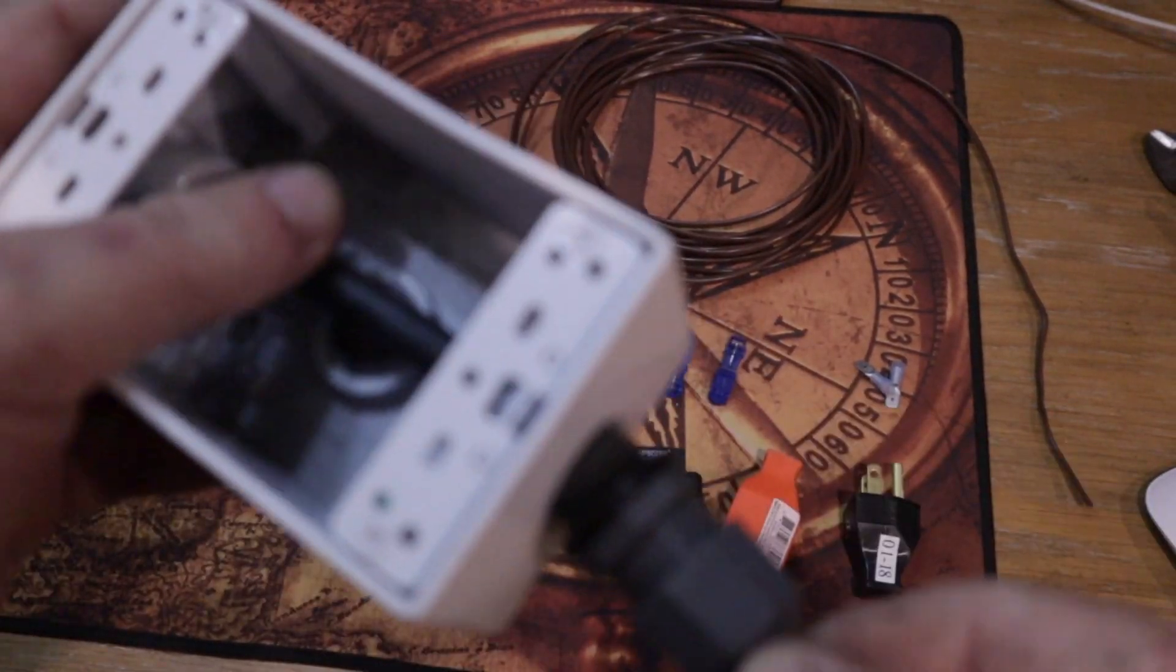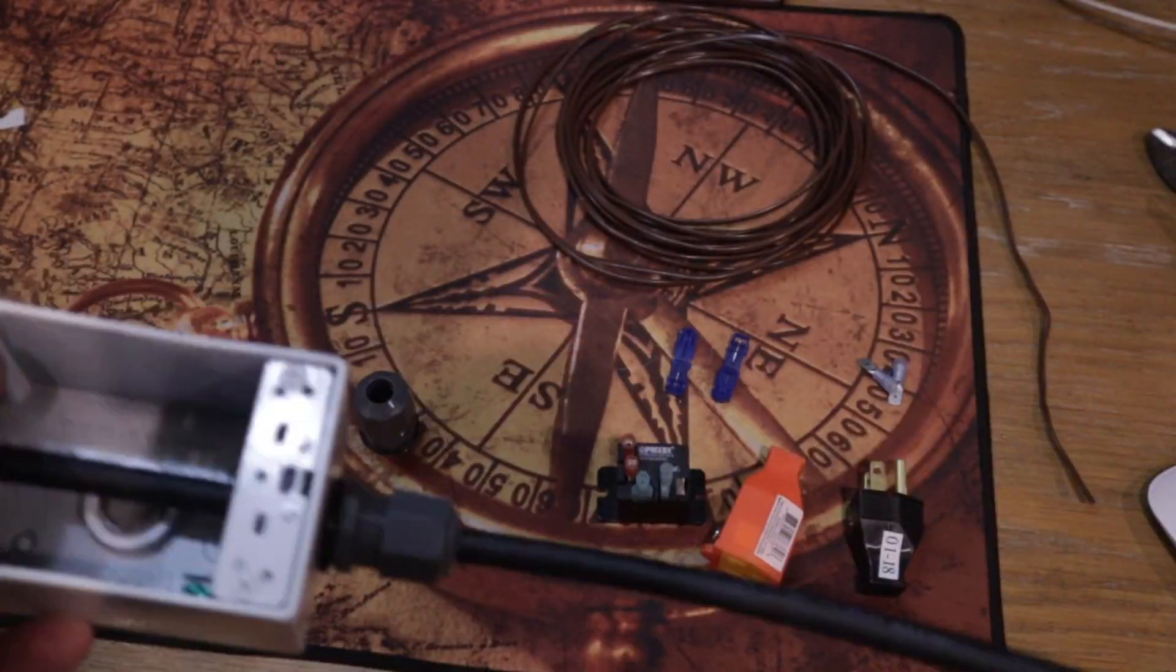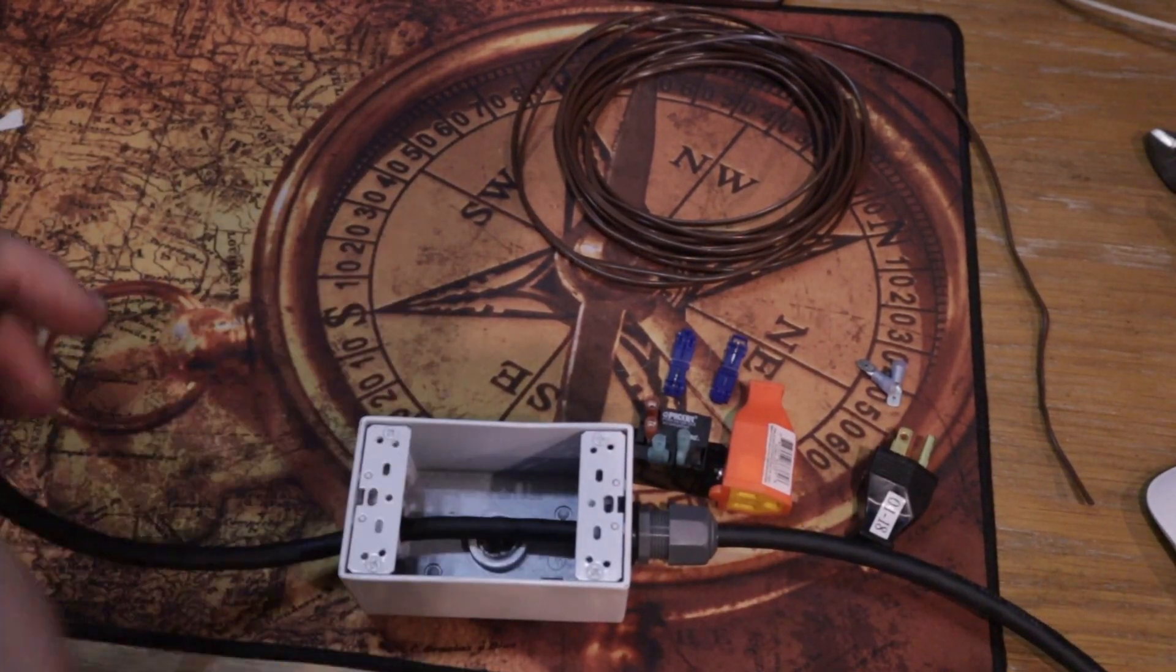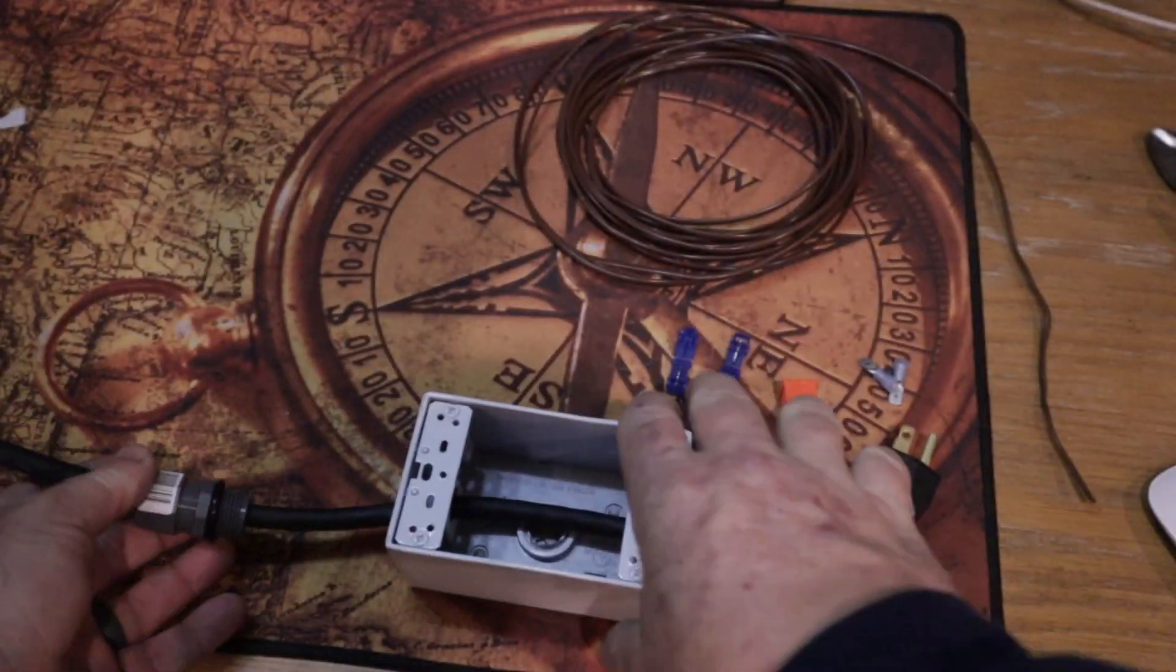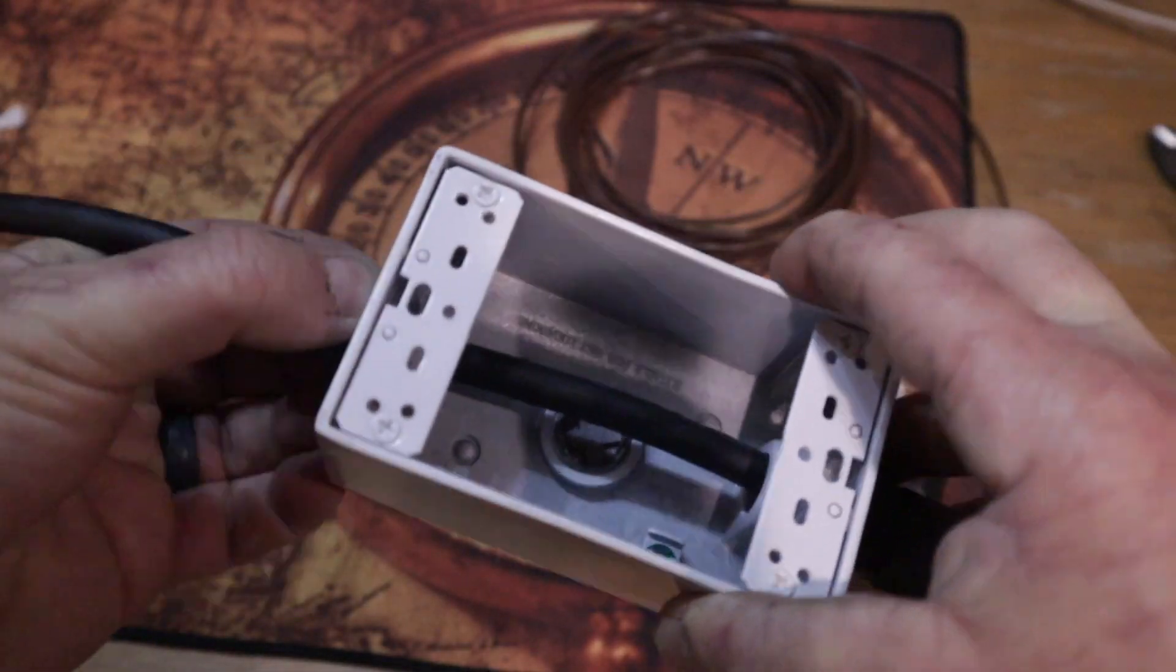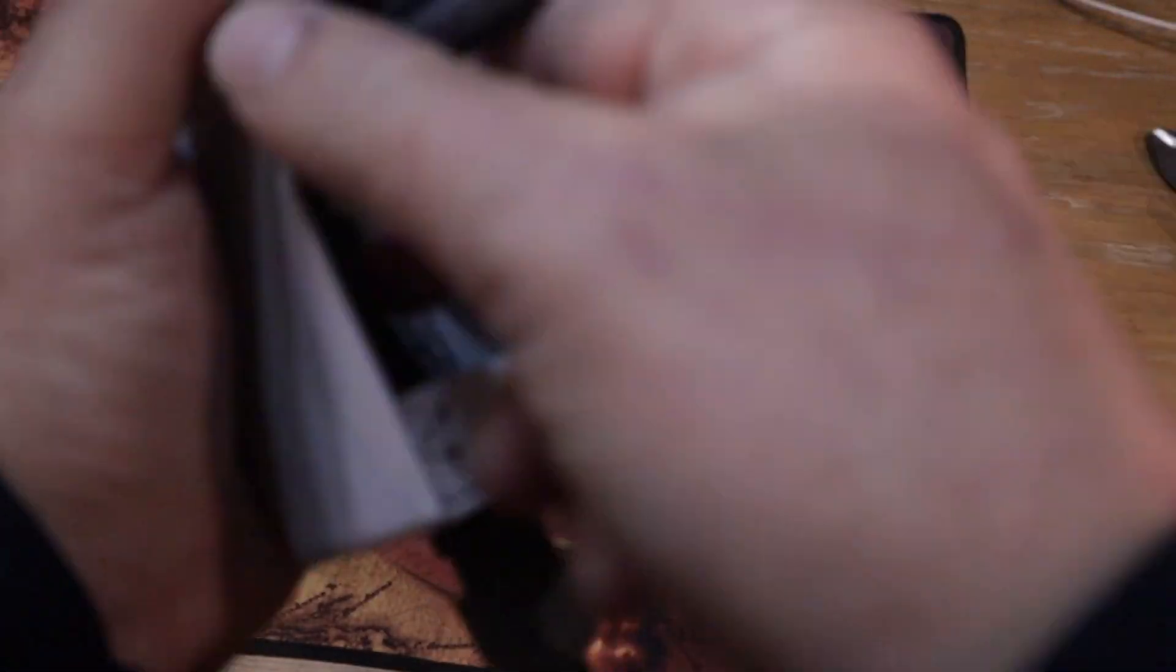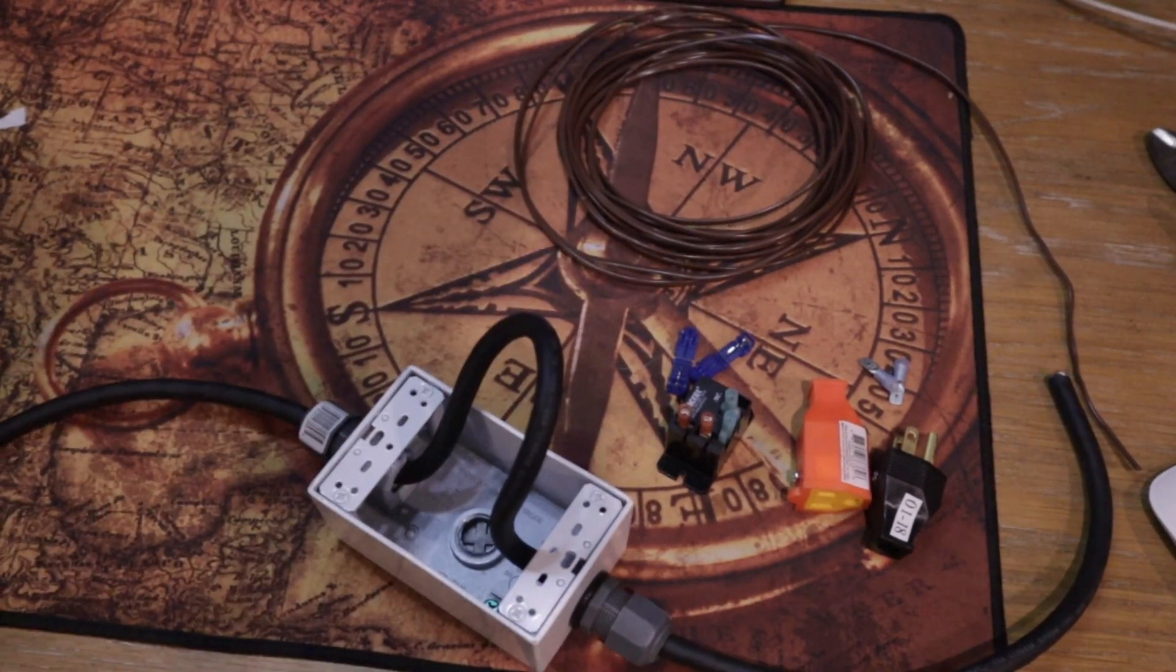Now I found it easiest if I were to run the wire through one of the water resistant connections first, feed that end through the box, pull the wire through, and then put the water tight connection on the wire on the other end.